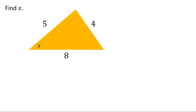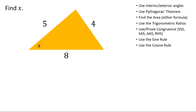Here is a different question. It looks really similar but I'm not going to be using the same rules. The question says find x, but this time I haven't got a right angle triangle. Last time I was tempted to use Pythagoras or the trigonometric ratios straight away because I had a right angle triangle — this time I can't use them because I don't have a right angle.